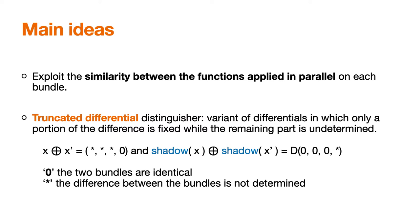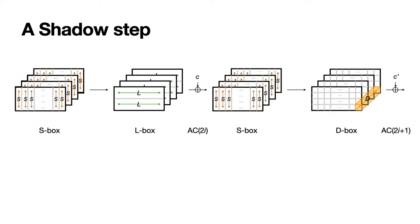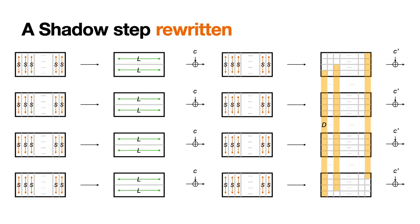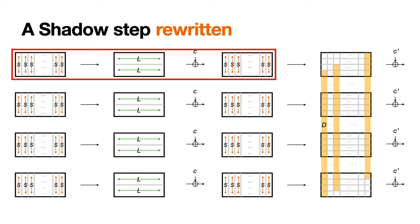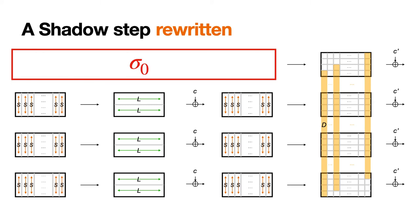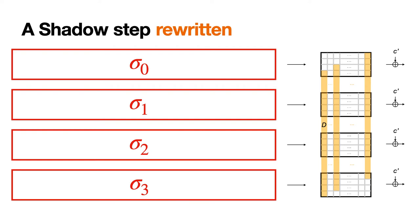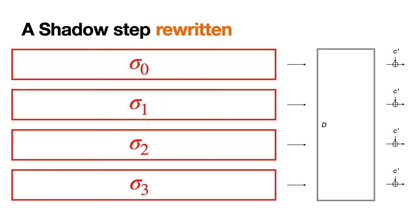For instance, if we start with two Shadow states that are equal on the last bundle but have no information on the first three, then some properties are still kept after encryption. More precisely, the first three bundles turn out to be equal if we invert the D layer. The zero symbol denotes that the two bundles are identical, and the star symbol means that the difference between the bundles is not determined. To study the differences and similarities in the bundles, we can rewrite Shadow using SuperS boxes. We can regroup the first four operations of a step — the S layer, the linear layer L of round A, the constant additions, and the S layer of round B — into one SuperS box, Sigma zero. The D box application layer can also be seen as one big linear permutation layer operating on the full state.